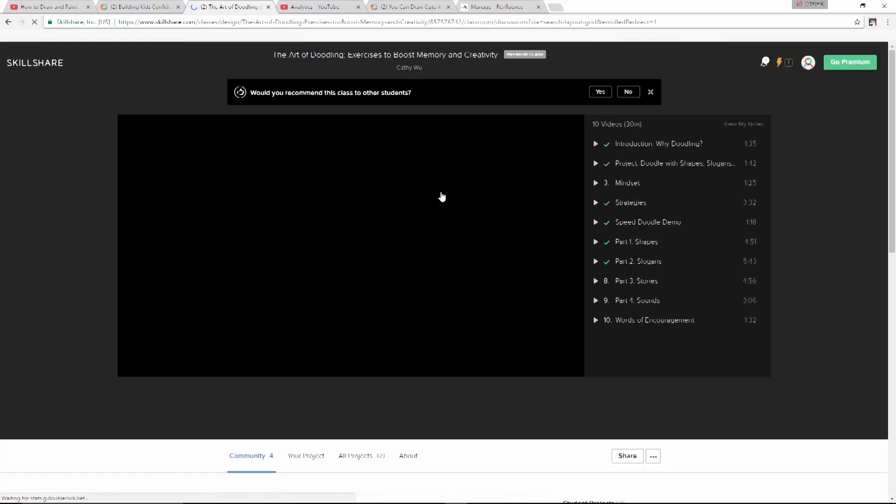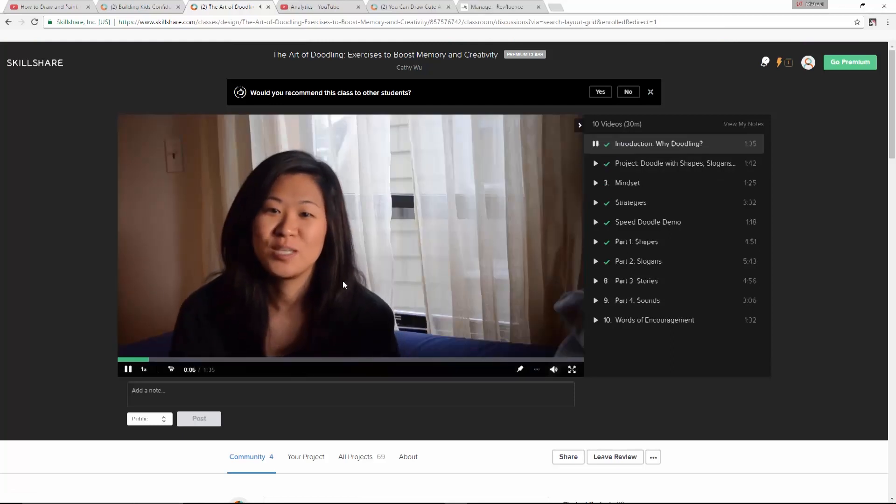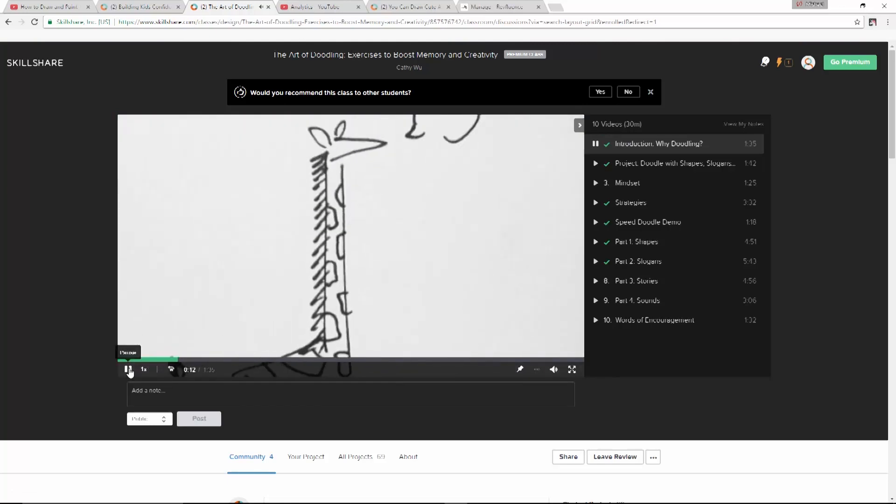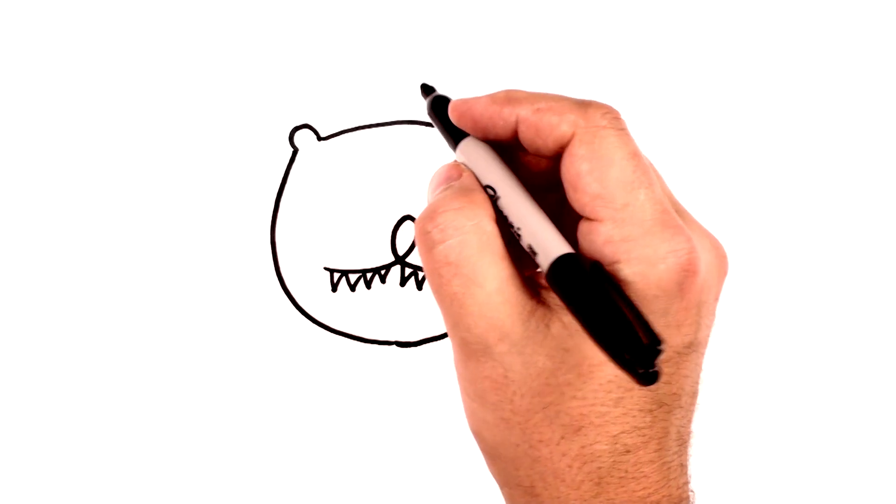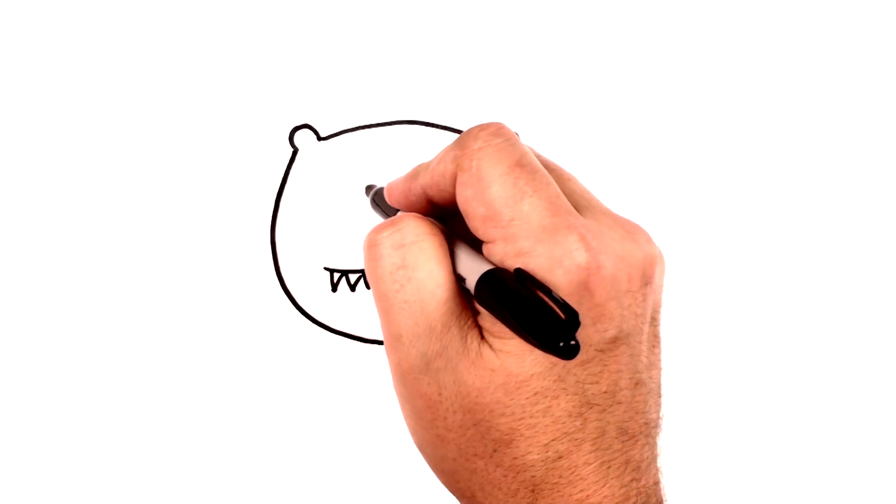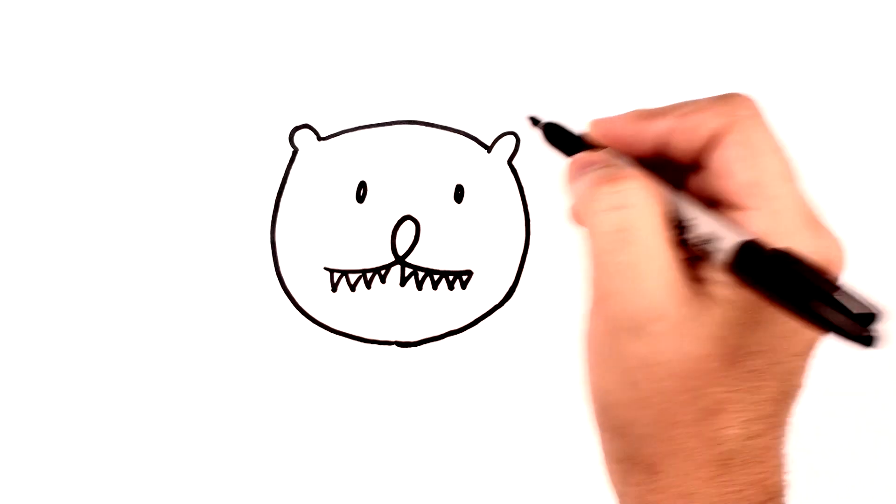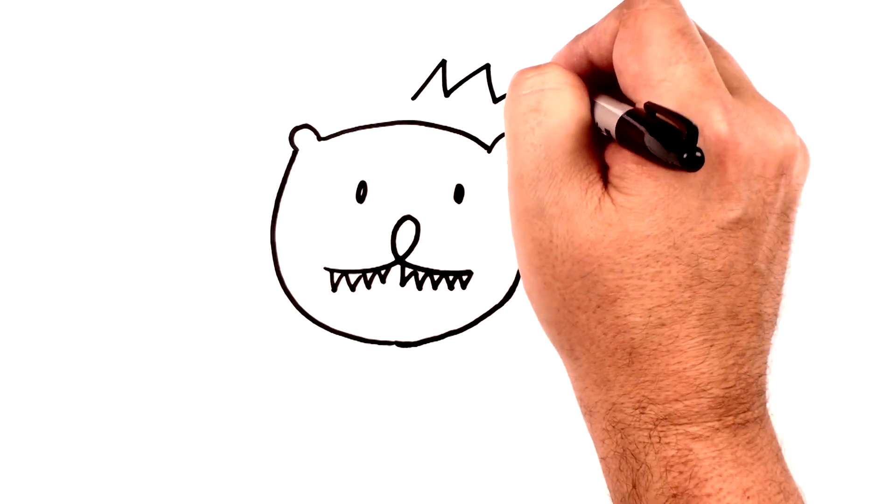I have to tell you this course has taught me a lot. I just finished watching it this morning and really enjoyed all the steps and all the lessons because Kathy goes into the mindset strategies of doodling and then different shapes. This is part of the shapes section where you take basic shapes and use them as inspirations for doodles.